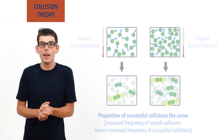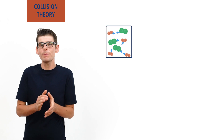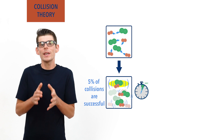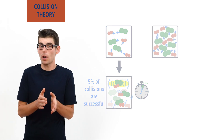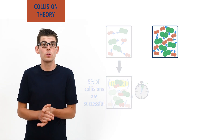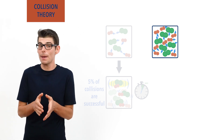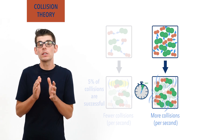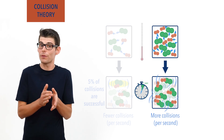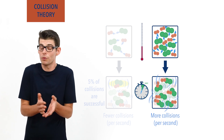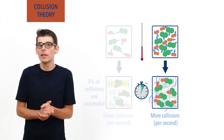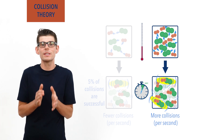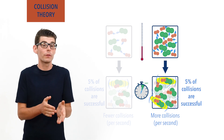It's just that because more collisions overall are happening every second, there will also end up being a greater frequency of successful collisions as a result. For example, if for our hydrogen and chlorine reaction, 5% of collisions were successful in the first second, and we then increase the concentrations of hydrogen and chlorine, there are now more particles in the same volume, meaning more collisions happening. However, because the temperature is the same, the average energy of the particles remains unchanged, and the percentage of successful collisions will still be 5% of the total collisions.